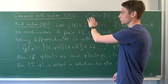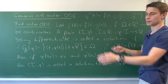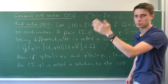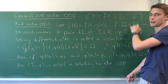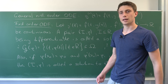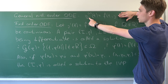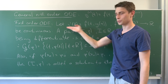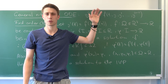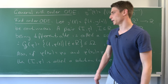A general nth order ODE basically just contains the nth derivative of y which is in terms of t, and on the right hand side we have some function f which is continuous and it depends on t and y and the first derivative of y up until the n minus one derivative of y. We only want to take a look at the first order case today: y prime equals f of t and y, just like here. This function f is continuous and it maps from some open omega to the real numbers.